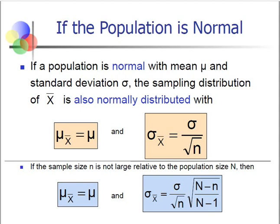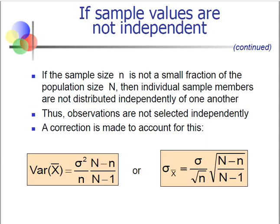To find the probability of sample means, we first have to know what the sampling distribution of the sample means is. From probability distributions, each distribution has a way of finding the probability of a random variable. In this case, for us to know the probability, we have to know the distribution of the sample means.